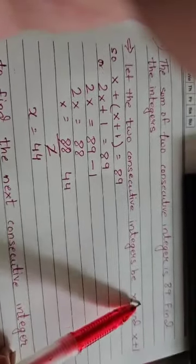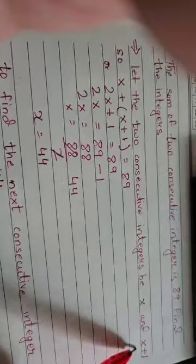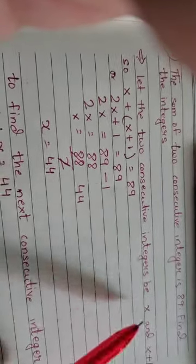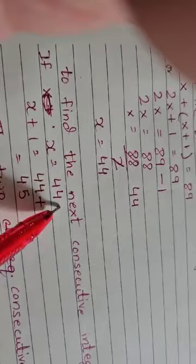two consecutive integers. You got x which you assumed here, but what about x plus 1? So we again use the value of x in x plus 1. We know that x is 44, so x plus 1 will